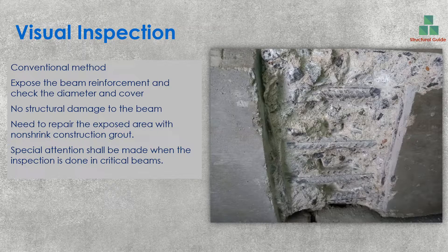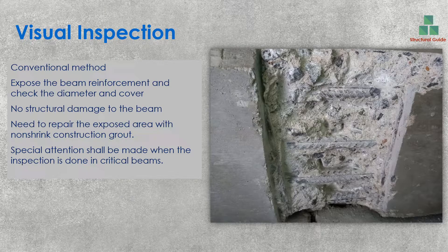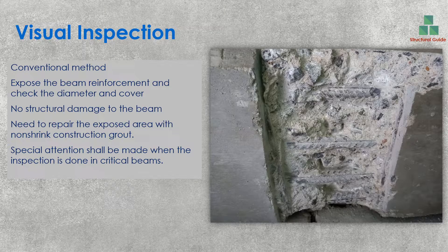We have to make sure no structural damage is done during this process, and we also have to repair the exposed area. As you can see in this figure, quite a large area is exposed in the beam, so this place has to be repaired. We also have to make sure the exposure is done in an area where bending is not critical — because the tension reinforcement carries tensile stresses and compression is carried by the concrete. So when chipping, you have to consider these factors carefully. Once you expose it, you have to repair it — the best material is non-shrink construction grout.